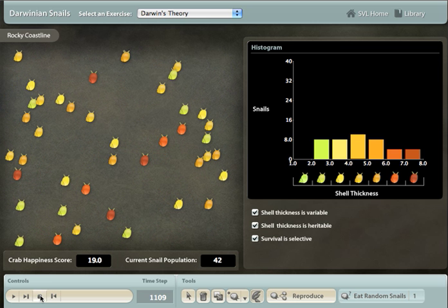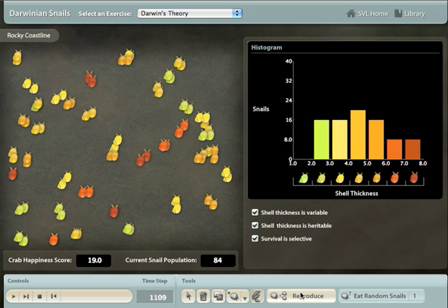After they eat their fill, the crabs go home and the snails reproduce clonally, so each daughter has the same shell thickness as its parents. Students perform a couple more rounds of eating and reproducing, and by the end, only thick-shelled snails are left. This shows natural selection in action.